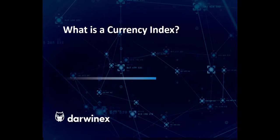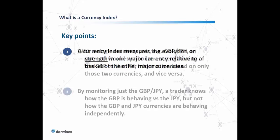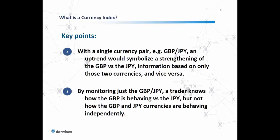A currency index measures the evolution or strength in one major currency relative to a basket of all other major currencies, including the eight we just talked about from the euro through to the New Zealand dollar. With a single currency pair — say, British pound / Japanese yen — an uptrend in the pair symbolizes a strengthening of the pound versus the yen. This information is based on only those two particular currencies, so by monitoring just this pair a trader knows how the British pound is behaving versus only the Japanese yen, not against any other major currency.